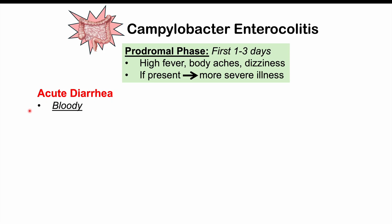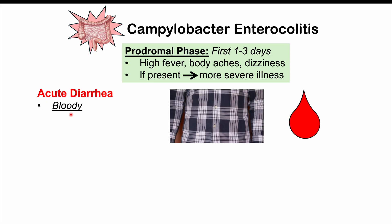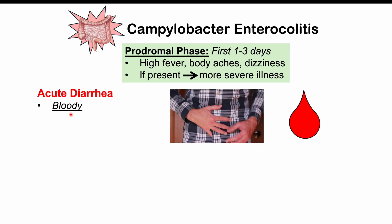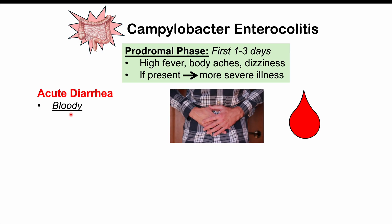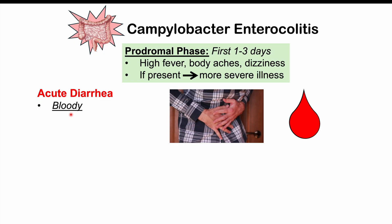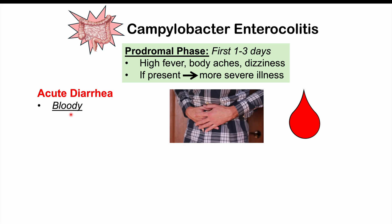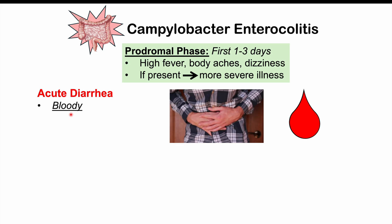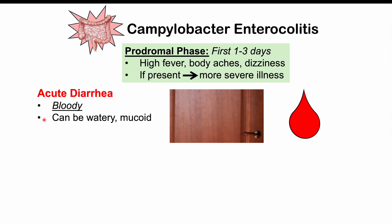Gastrointestinal symptoms include acute diarrhea, which is bloody in about 50% of cases. Campylobacter jejuni is a very important cause of acute bloody diarrhea — acute meaning lasting less than two weeks. It can be watery, or start watery and become bloody, or alternate between watery and bloody. It can also be mucoid with mucus in the stool. In some cases diarrhea can be voluminous — occurring anywhere from eight to ten times per day.